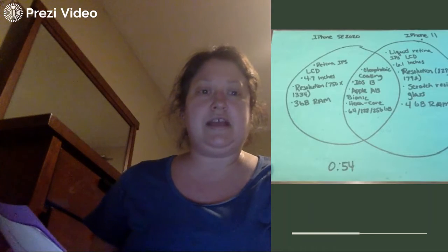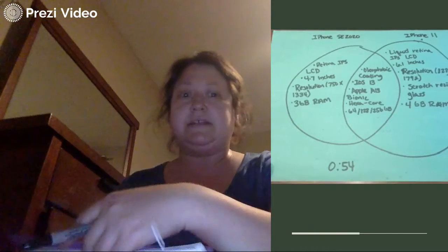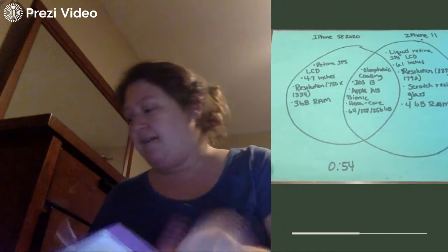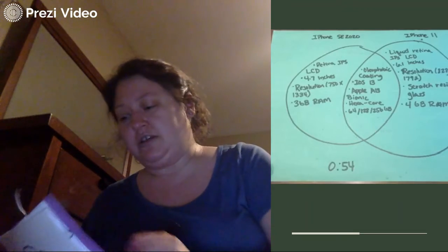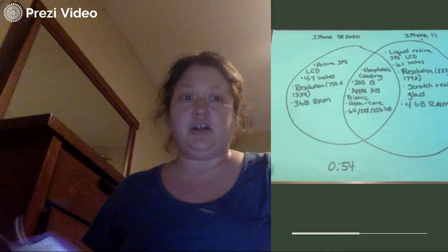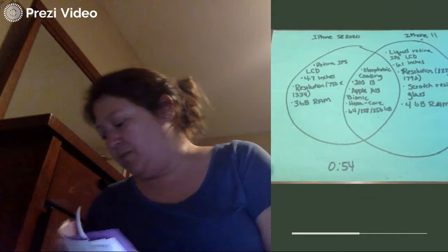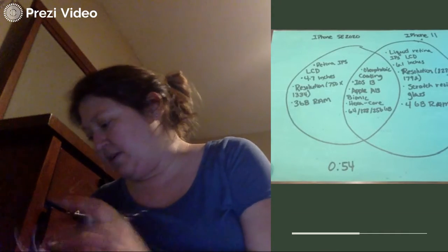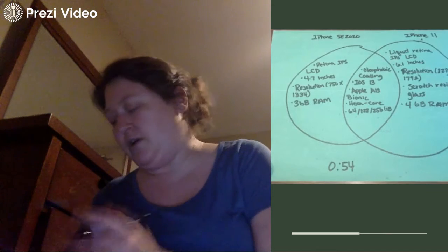So I'm going to model how you would set that up. You'll see here it's going to have the two circles of a Venn diagram. That's how we're going to be doing the compare and contrast. You're going to put one thing on one side.